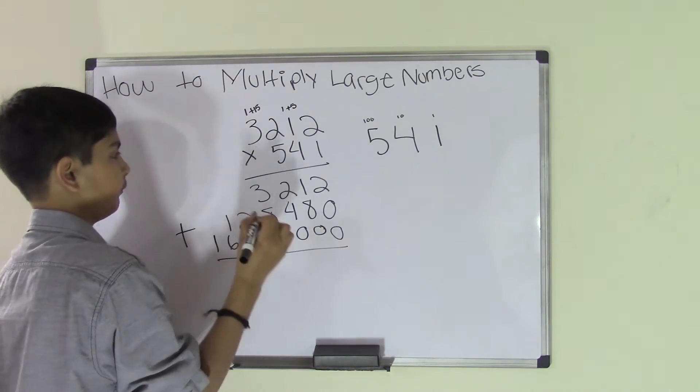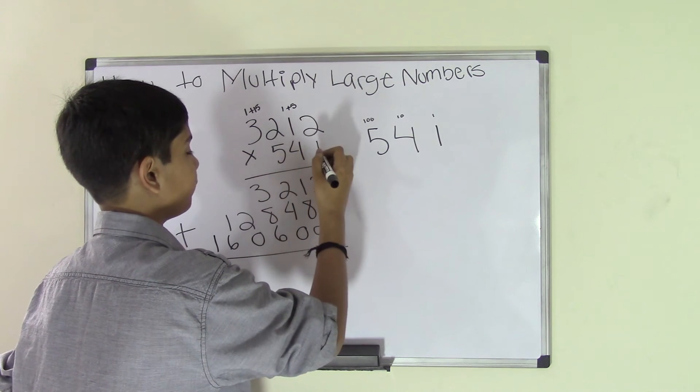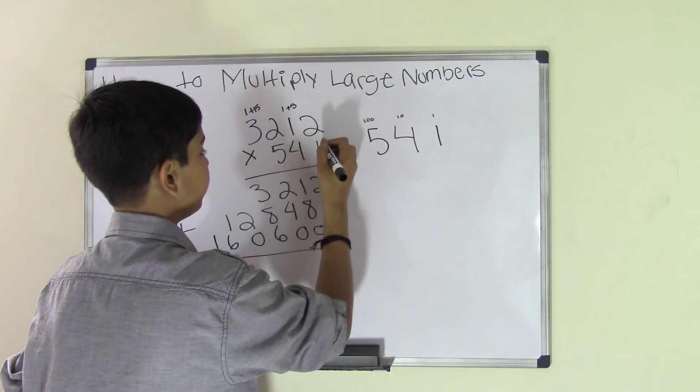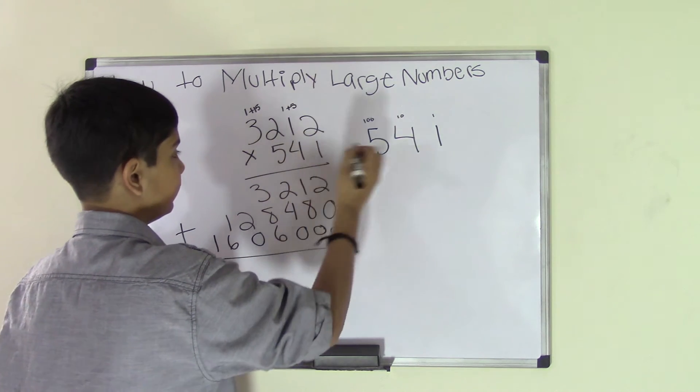Now we go ahead and add. Remember that we're adding because these are three different products: we're doing 1 times 3,212 and 40 times that and 500 times that, since they're in different place values. So we're going to add that.